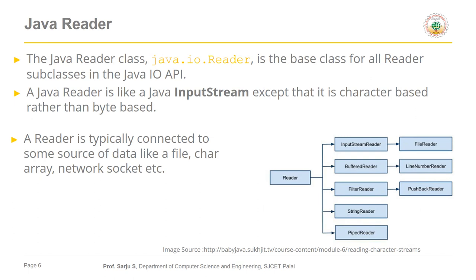The Java Reader class is available in the java.io.Reader package and is the base class for all Reader subclasses of Java IO. We have different subclasses available in the Reader class: InputStreamReader, BufferedReader, FileReader, StringReader, PipeReader. For different functionalities — if you want to read from a file use FileReader, if you want to read from the console use BufferedReader.